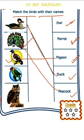Good. Next is parrot. Match the word 'parrot' with this picture. Owl, parrot. So we will match this picture with the word 'parrot'. Now come on next — it's owl. Match this picture with 'owl'.